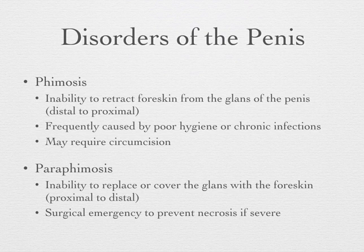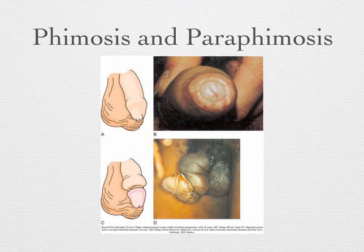Paraphimosis is the inability to replace or cover the glans with the foreskin — from proximal to distal. It's the opposite of phimosis. This is a surgical emergency because it can actually cause tissue necrosis of the penis by reducing circulation. If they are unable to move the foreskin forward, it's a urologic emergency and they would have to do a circumcision.